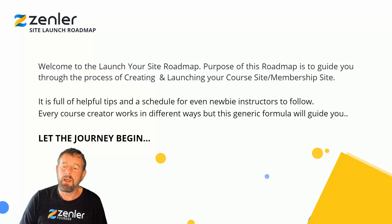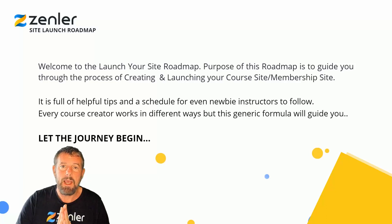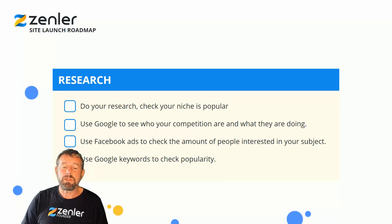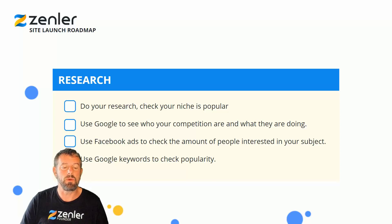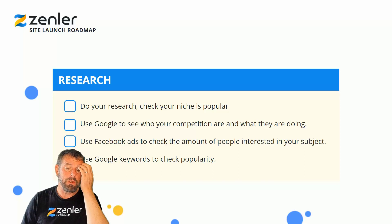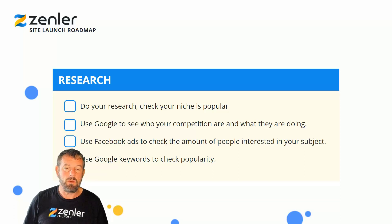Every course creator works differently, but this is a generic formula that will guide you — you might change things as you go, but the principles are the same. First, you need to do your research. Check that your niche is popular. You can use Google to see your competition, use Facebook Ads to check interest in your subject without paying for an ad, and use Google Keywords to check the popularity of your keywords.